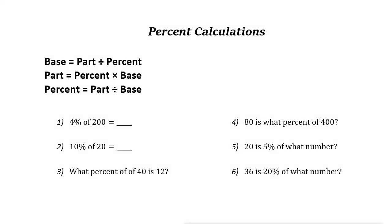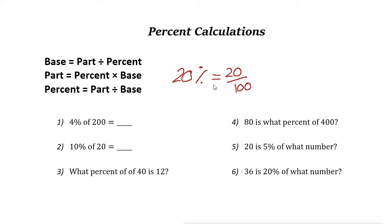Percent calculations. Percent means per 100 — it is a ratio of a number and 100. For example, 20% simply means 20 out of 100. The symbol for percent is %. So percent means per 100.